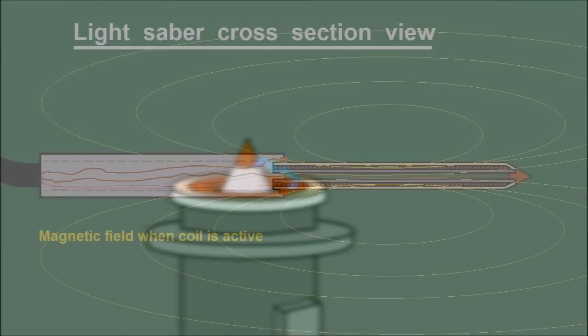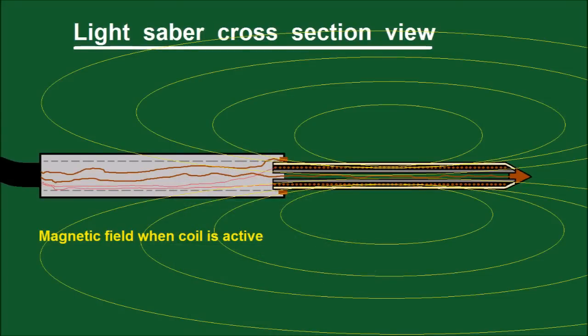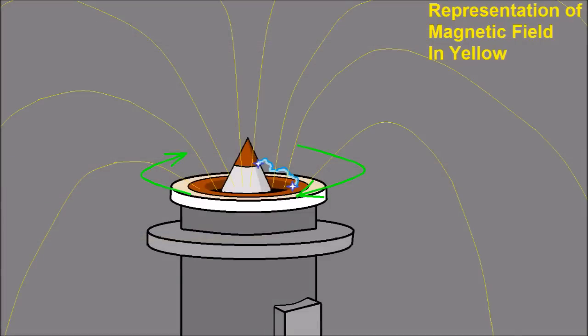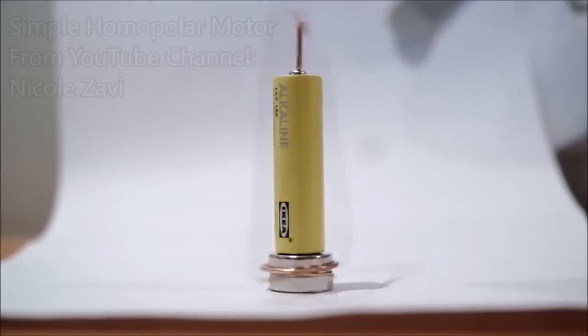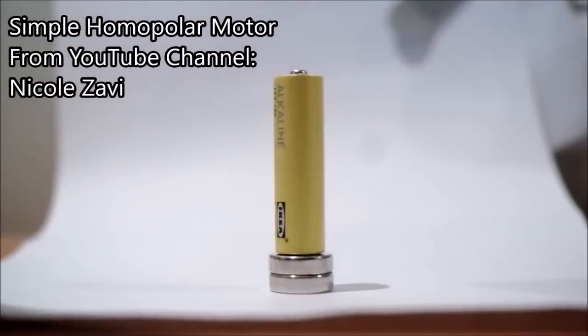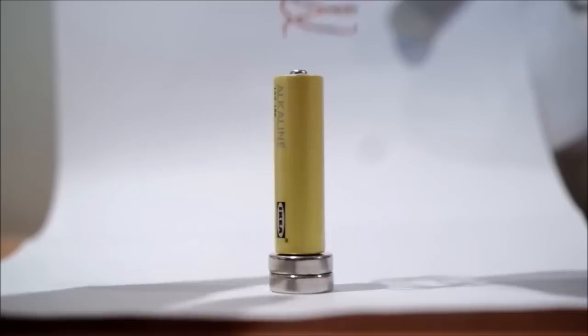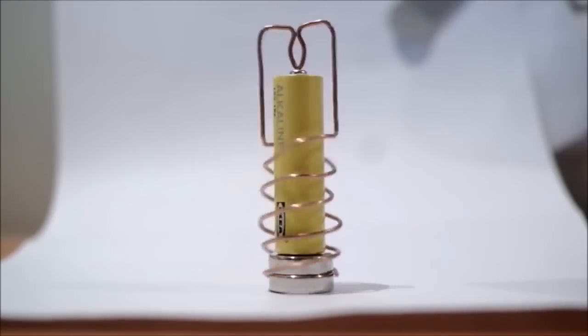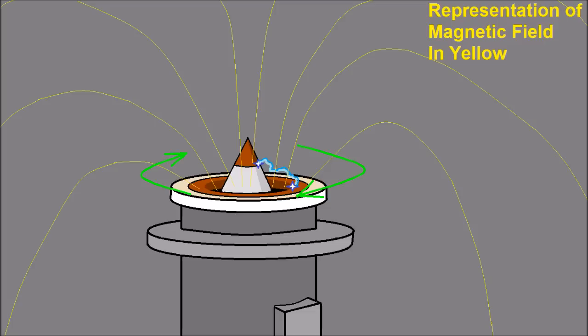A copper coil inside the solid blade is also powered on and creates a magnetic field. The magnetic field from the coil and from the electric plasma arc interact to form a type of homopolar motor where the plasma arc is the rotor. The electric arc is filling the same role as the copper wire in the homopolar motor demonstrated on another YouTube channel. Since the plasma arc has such a low mass, it can accelerate almost instantly to a very high RPM, forming a vortex skin of plasma over the blade.